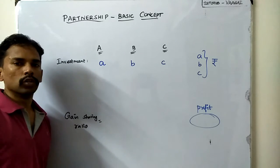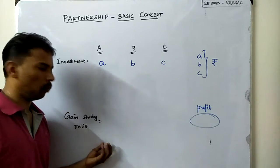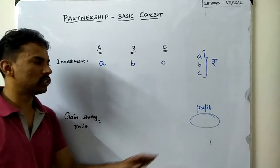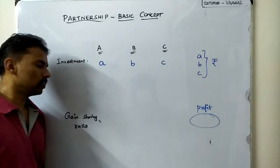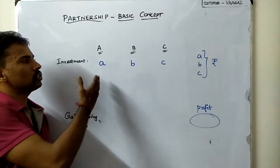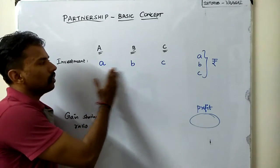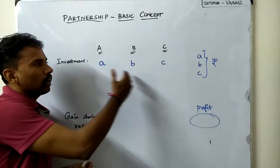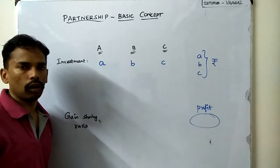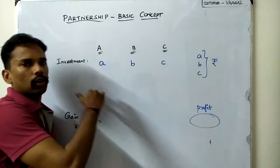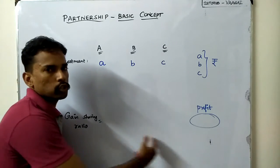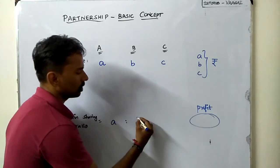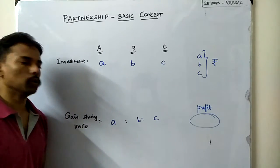We have to find in what ratio they are going to share their profit, and that will easily tell us how much share each of them will get. The logic is quite easy: we look at how much money they are investing — a, b, and c respectively. Whichever amount is greater or lesser doesn't matter; what matters is that in the same ratio as they are investing, their gain should also be shared. So the profit will be shared in the ratio a : b : c.